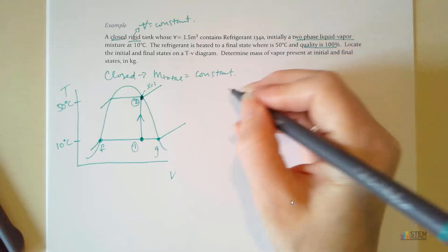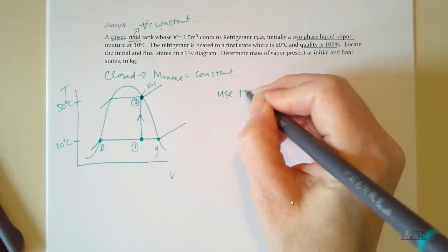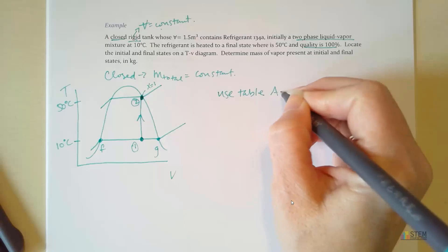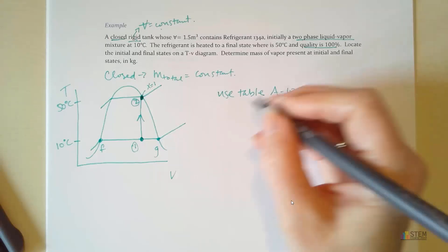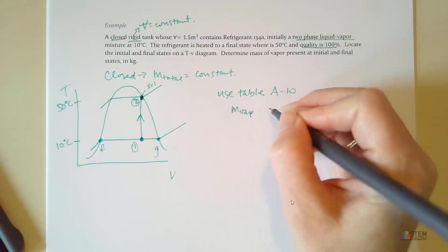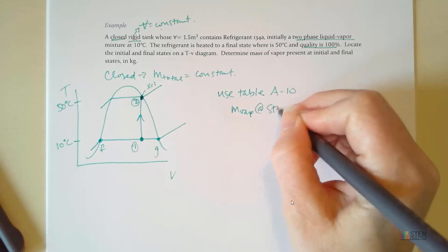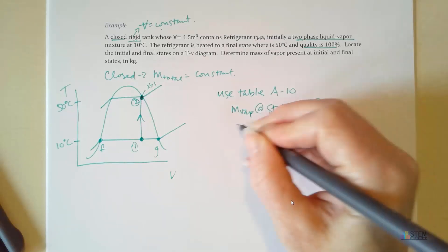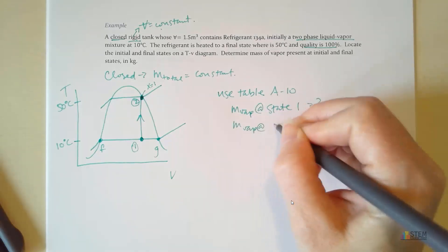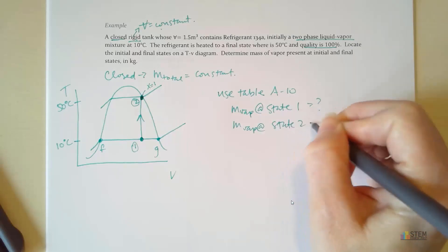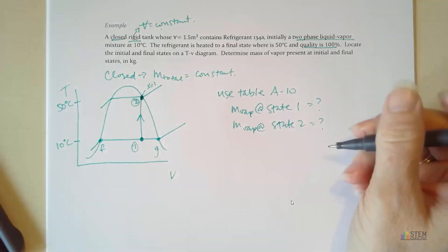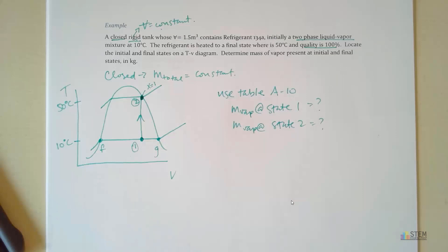Now, what we're going to do, since we have refrigerant, let's figure out what table we need. In the Moran book, we're going to need table A10. And we want to find the mass of the vapor at state one, and then we want mass of the vapor at state two. So those are our unknowns.